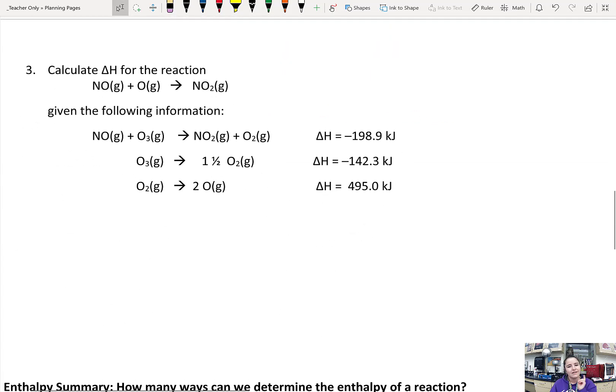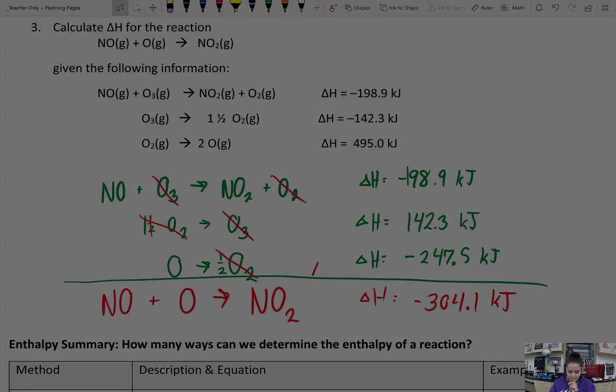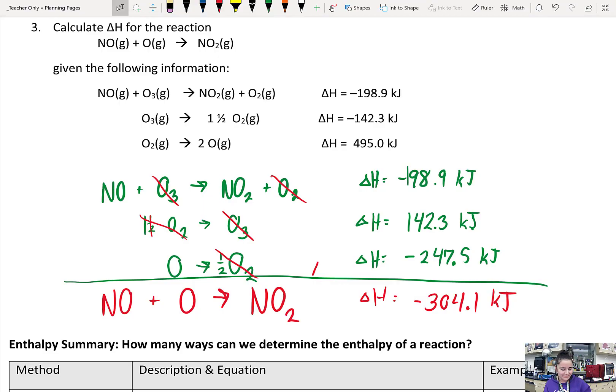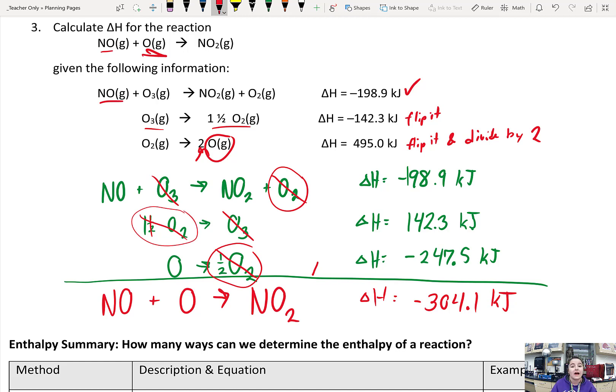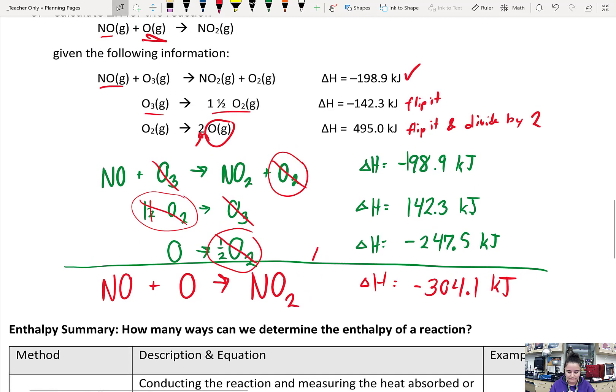We have one more. Go ahead and pause the video and try this one on your own and then I'll show you guys the answer in a sec. Did you get negative 304.1 kilojoules? If so, you are good to go. So for this first reaction I left it the same. For this second one all I had to do was flip it, and then for this one I wanted that O to be on the reactant so I had to flip it and divide by 2. Did that get that coefficient of 1 on the oxygen? So then you can see I have the one half O2 and then the O2 there - that's what cancels out the one and a half O2 over there.